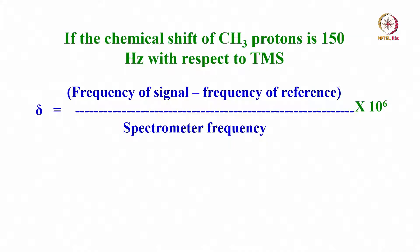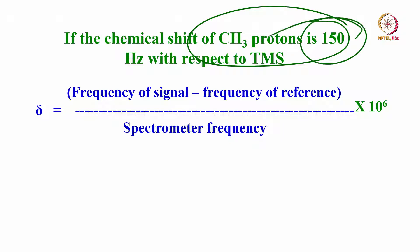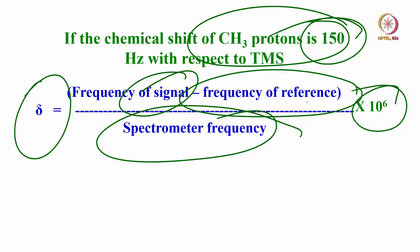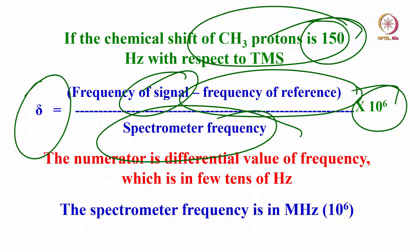Now I am going to tell you how we measure chemical shift today. For example, if I consider the chemical shift of a proton at 150 Hz with respect to TMS — at a 400 MHz spectrometer the shift in the resonating frequency is 150 Hz with respect to TMS. We use the formula: frequency of the signal minus frequency of the reference, divided by the spectrometer frequency in megahertz, multiplied by 10⁶.